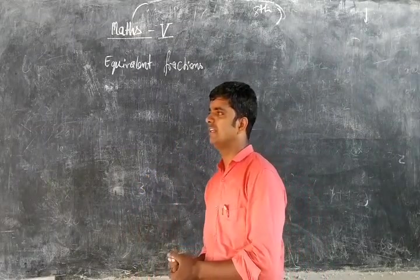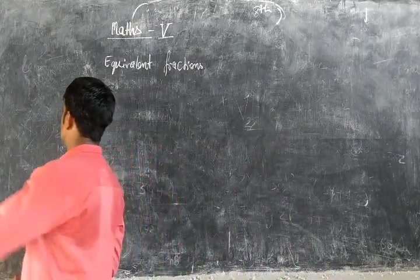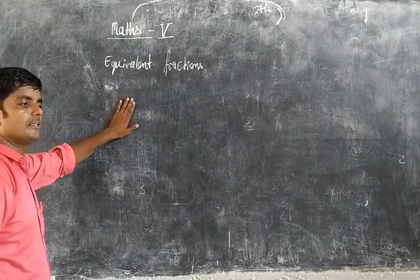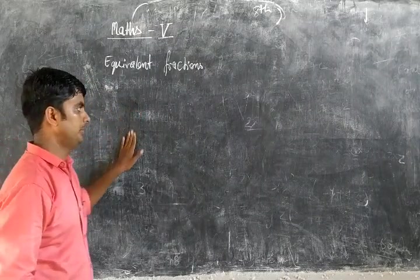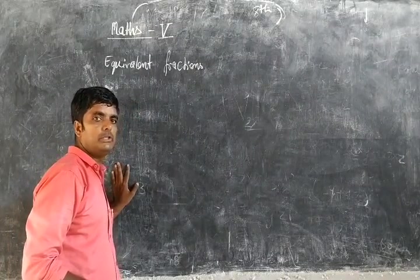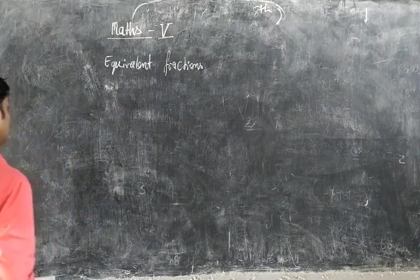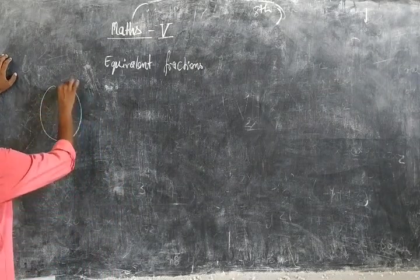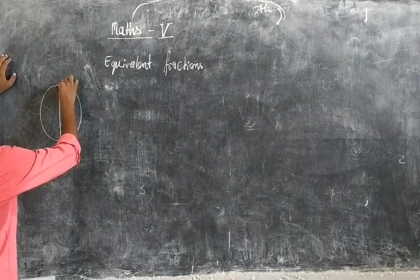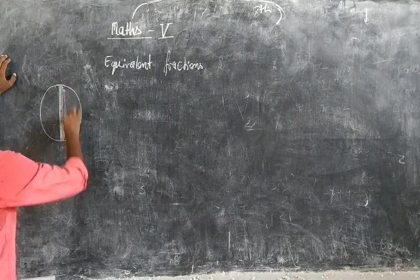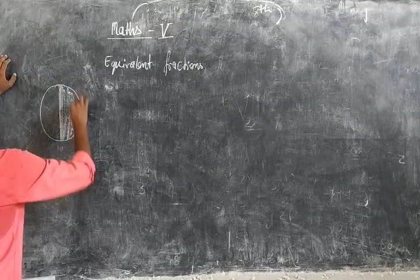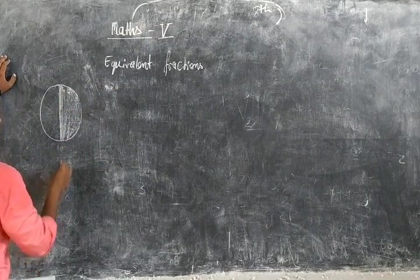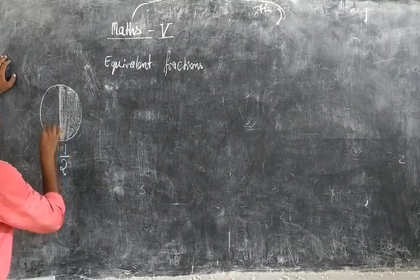Back to our first topic: equivalent fractions. What is an equivalent fraction? Fractions whose numerator and denominator are changed but the real meaning and real value remains the same. Suppose that we have a circle, we can divide it into two parts and take one part. If we take one part, we represent it as 1 by 2.